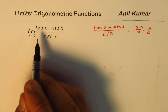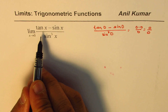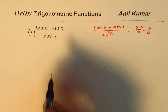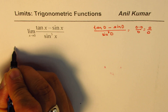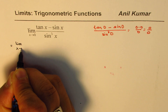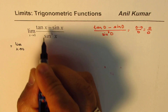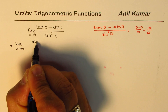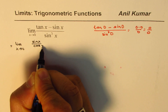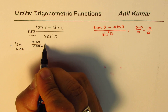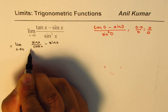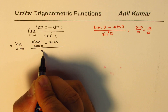So whenever you have tan, you could always write tan as sin over cos and then simplify the trigonometric expression. So we could write this as limit x approaches 0, and write tan as sin x over cos x minus sin x over sin cube x.